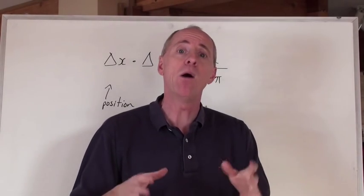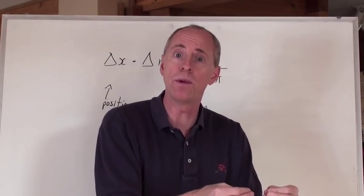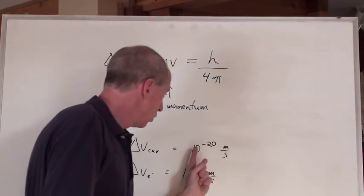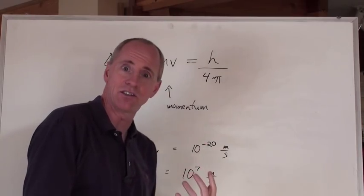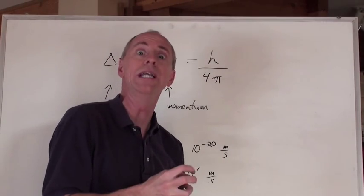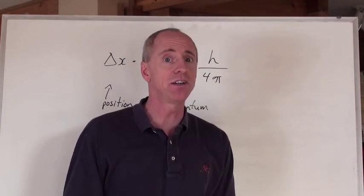Which just means this. How uncertain are we in the speed of a car when we measure it very, very accurately? Well, 10 to the negative 20 as an uncertainty is a very, very small uncertainty, which means we are really, really certain about where that car is. And that's very true.